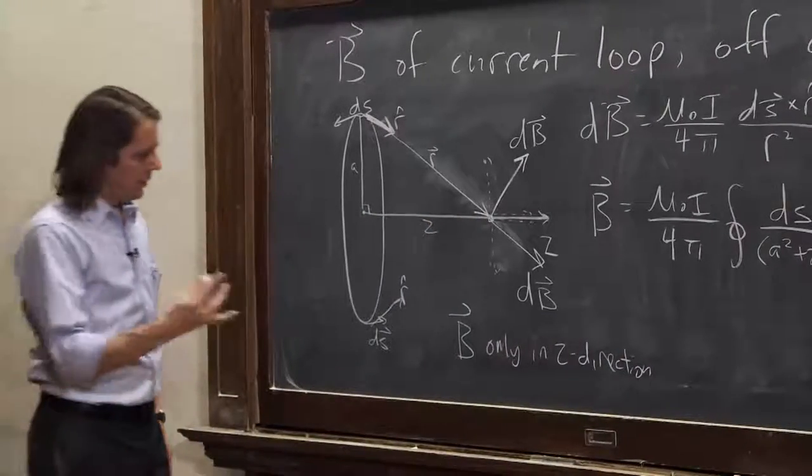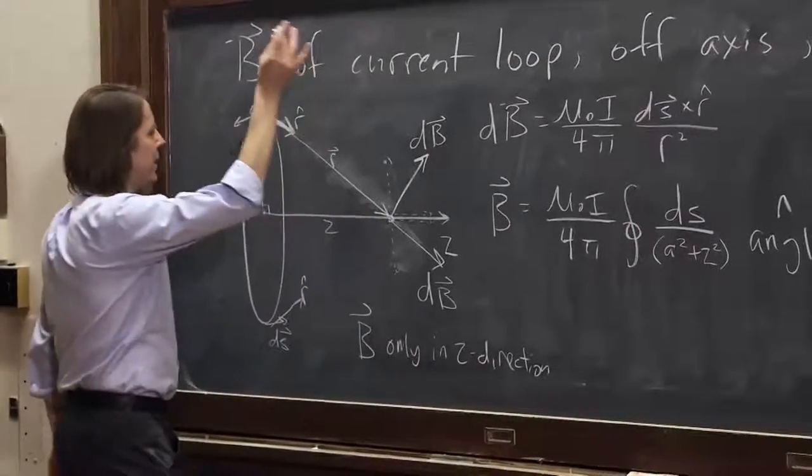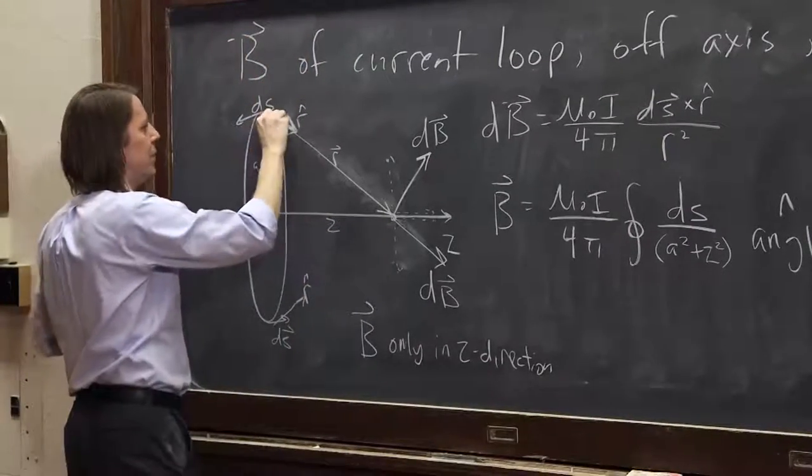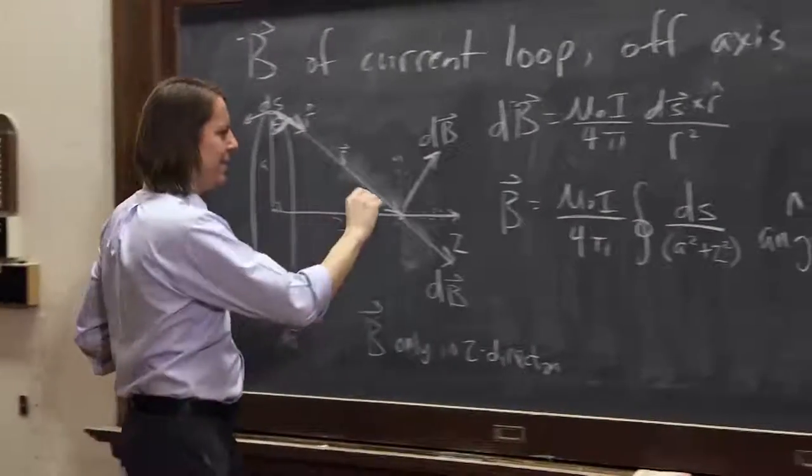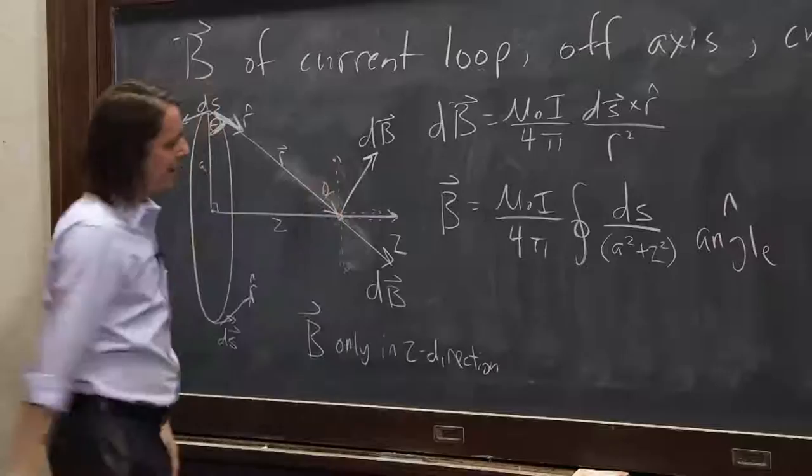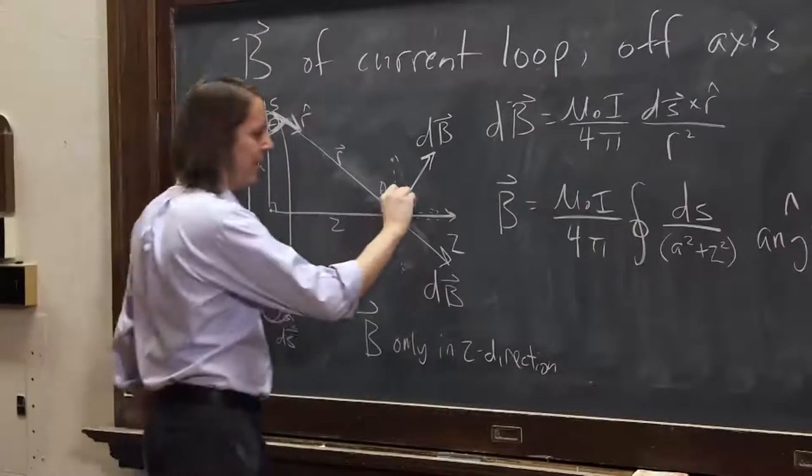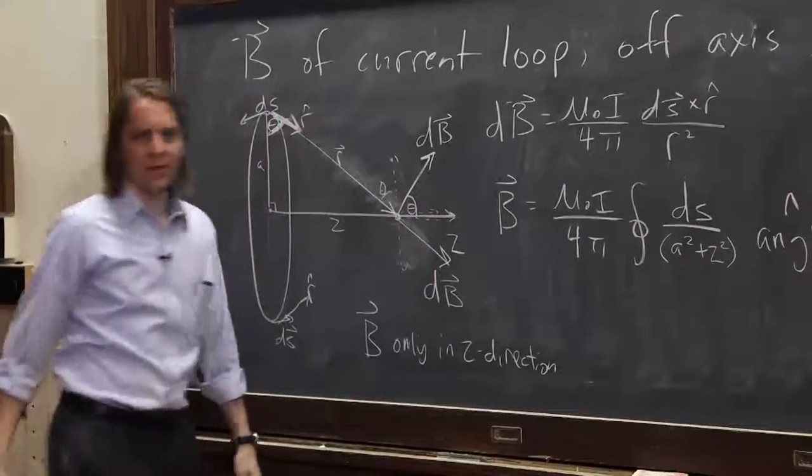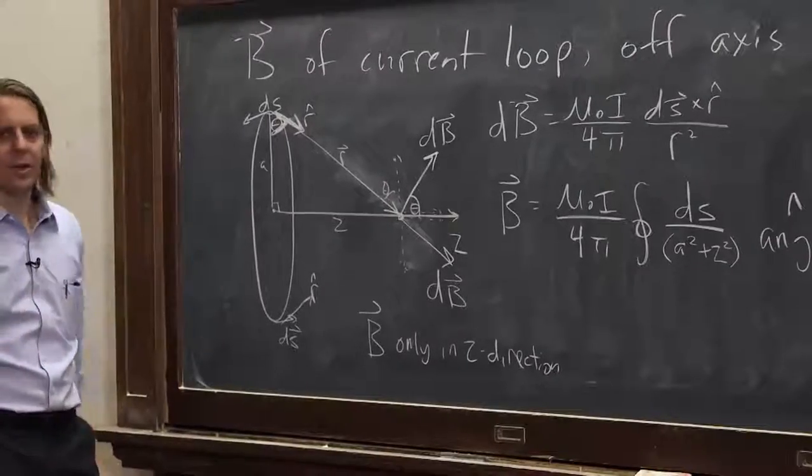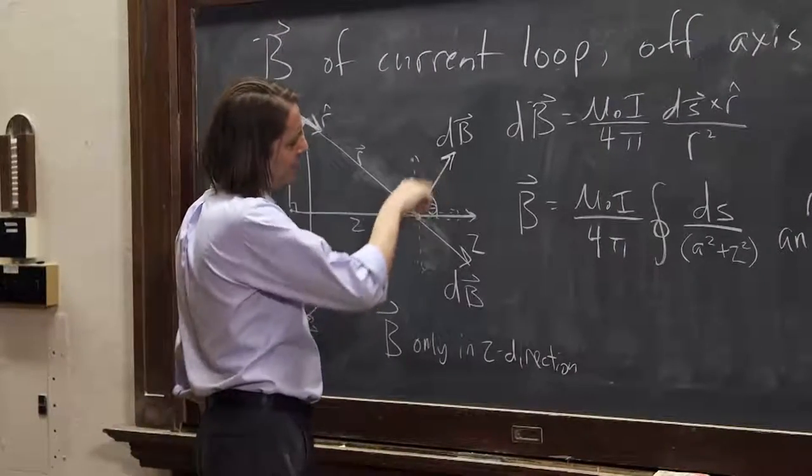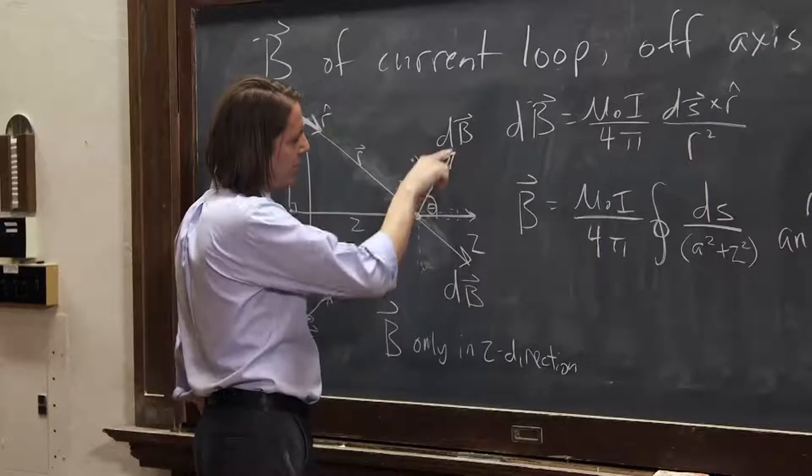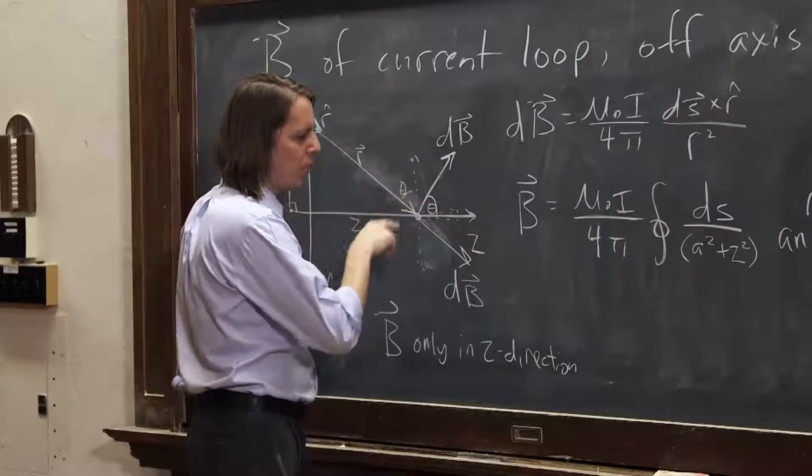Okay. How do we get that component? Well, what angle do we know? Let's see. Well, let's call this angle theta. If that angle is theta, then that angle is theta. And if that angle is theta, then that angle is theta. If you stare at it long enough, you'll believe me. All those angles are theta. So then we know that it's the cosine component. It's the adjacent over hypotenuse component. So we need a cosine on there.